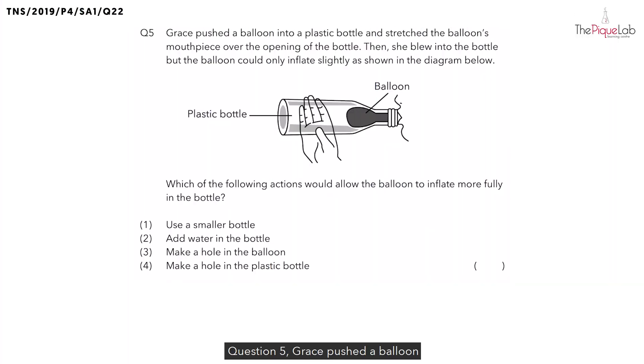Question 5. Grace pushed a balloon into a plastic bottle and stretched the balloon's mouthpiece over the opening of the bottle. Then she blew into the bottle, but the balloon could only inflate slightly as shown in the diagram below.